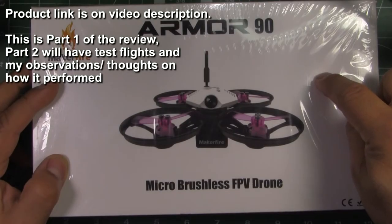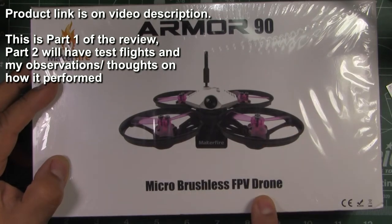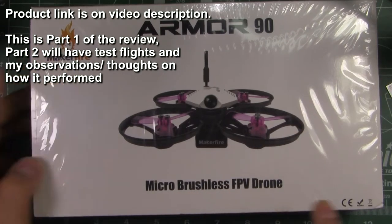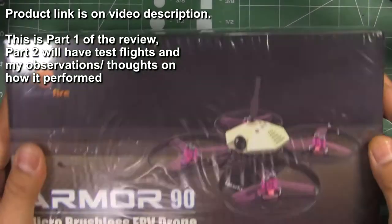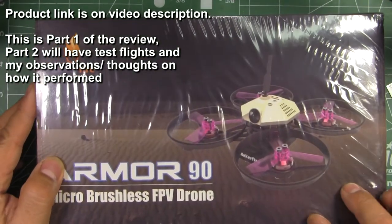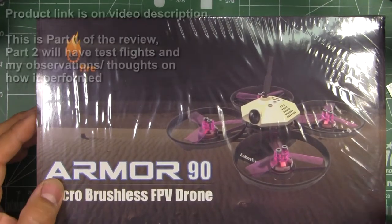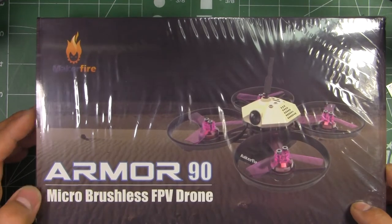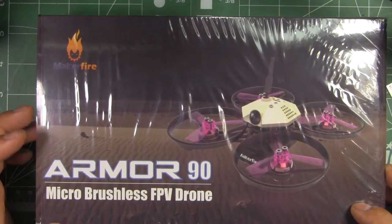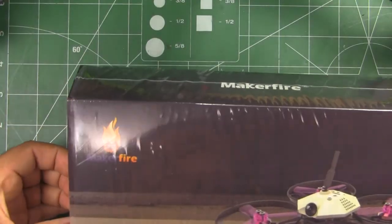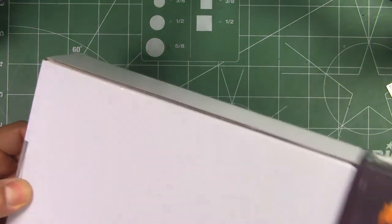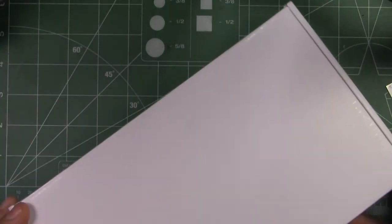All right, so here we have the Armor 90 Micro Brushless FPV Drone by Maker Fire. This was sent in by Gearbest so I can review it. Thanks to Gearbest for sending this Micro Brushless FPV Drone. So we'll open the box real quick, just show you what comes in the box.